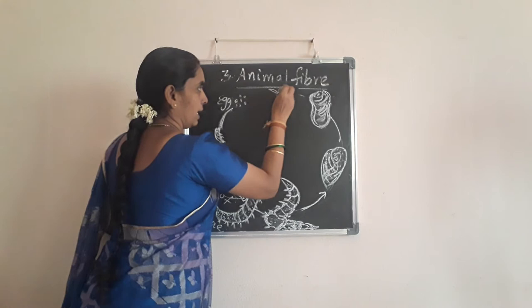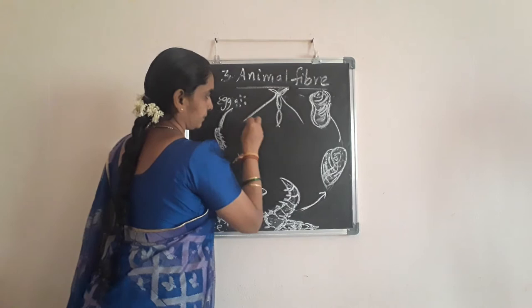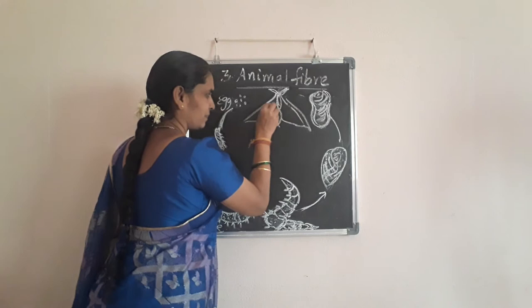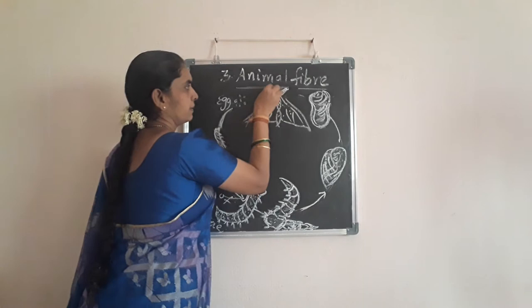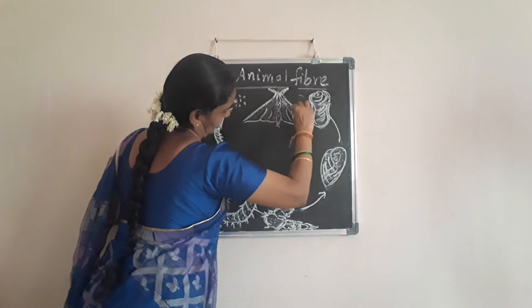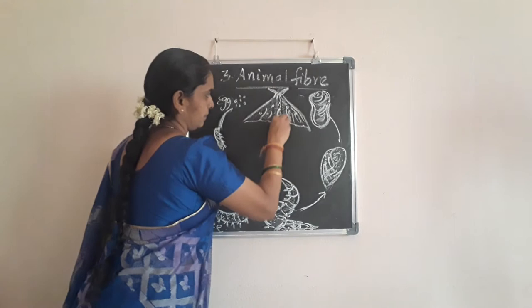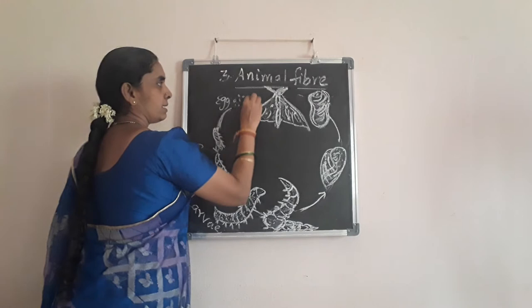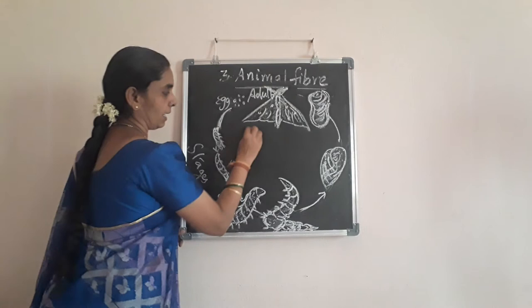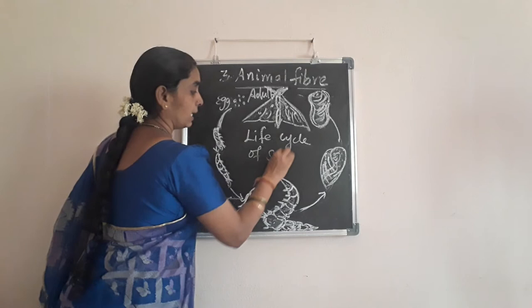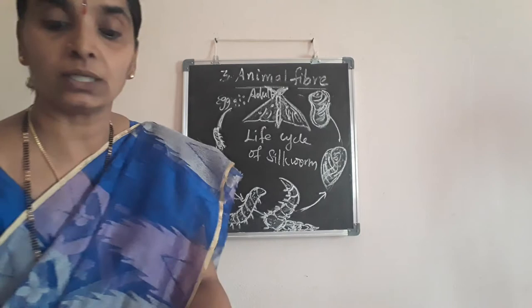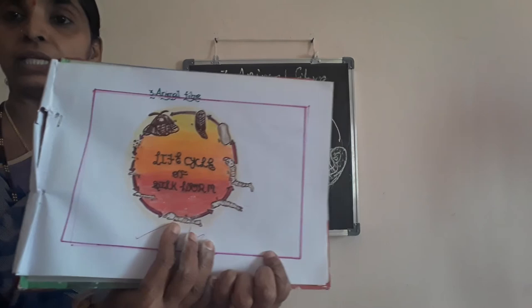After the cocoon stage comes the adult or imago stage. This is the life cycle of silkworm. I think you can draw it easily, children. See the picture here also — very effectively the children last year have drawn. Is it clear? I think you can easily see it and know how it is.